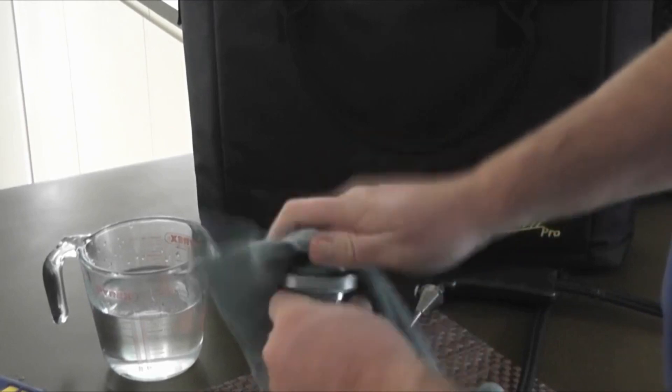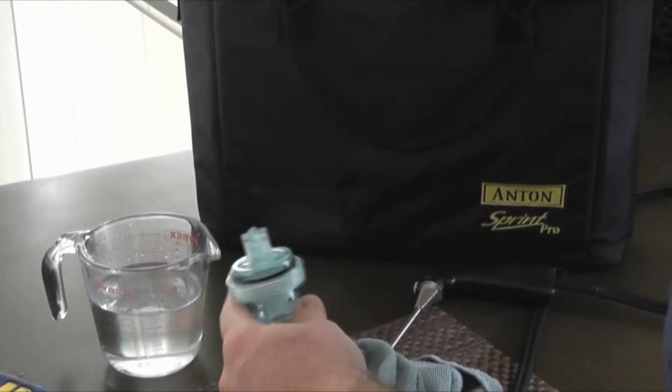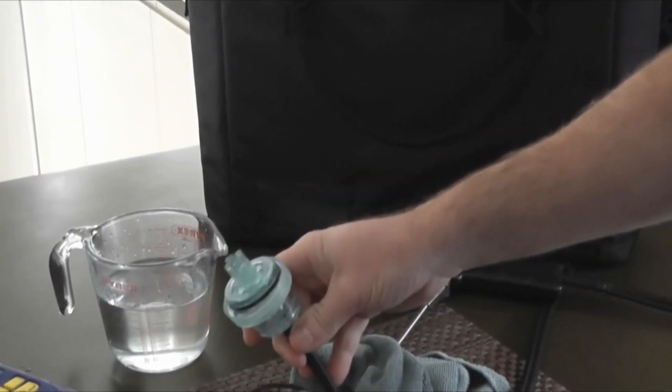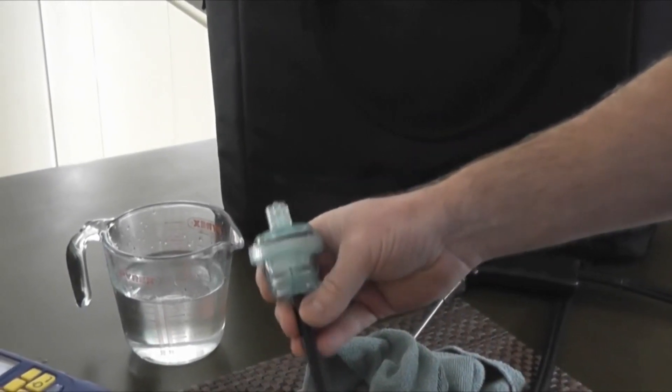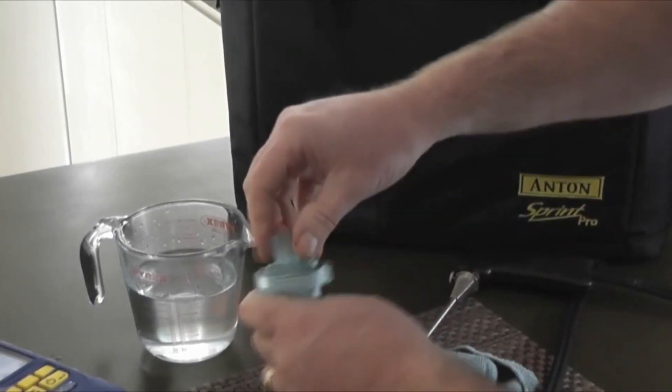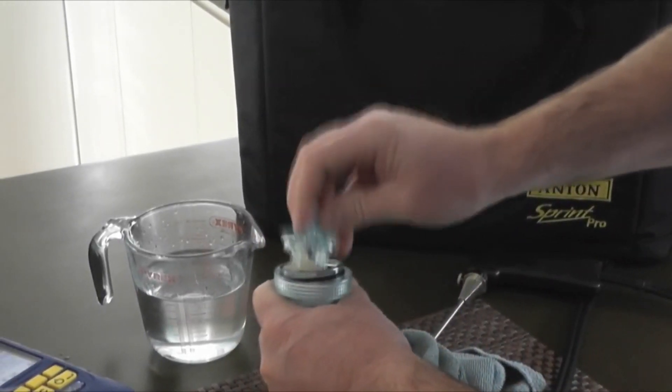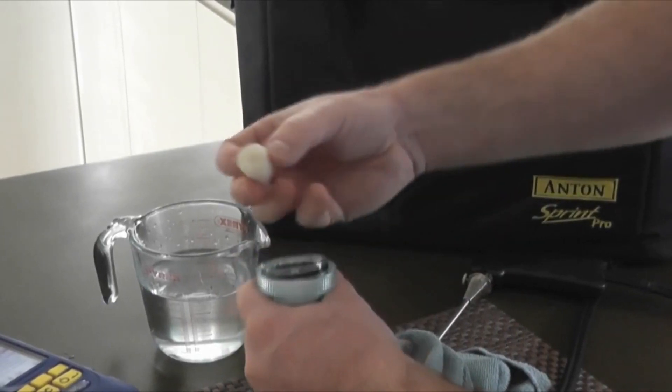Now, normally and before on the Sprint V and the Sprint Evos, we've had paper filters. Now paper filters, although they've been used for many years and they're still used by many flue gas analysis companies, we've now swapped over for a foam filter.